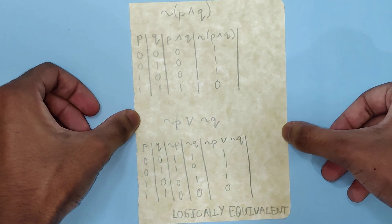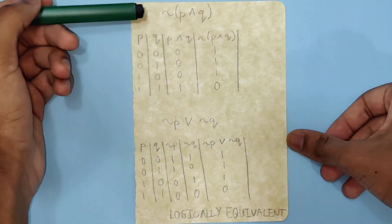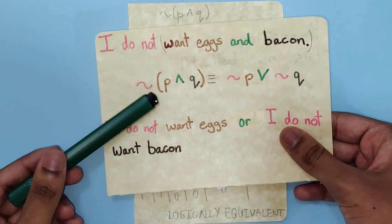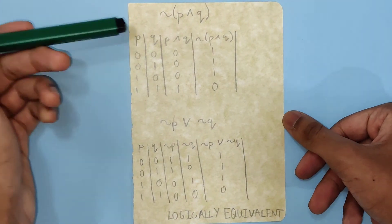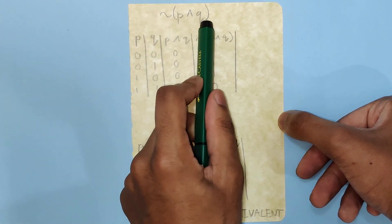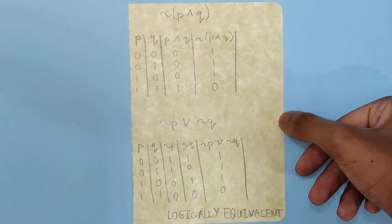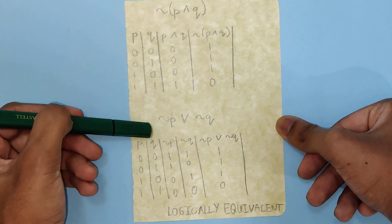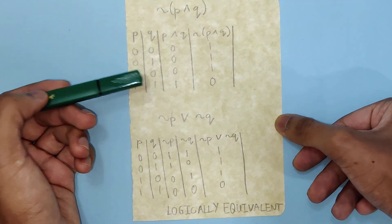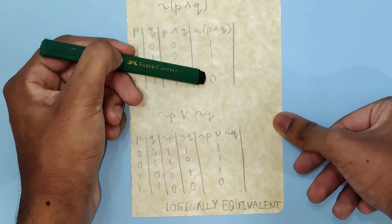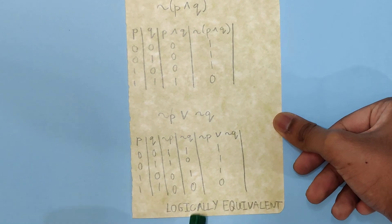There is also a mathematical proof for De Morgan's first law, which you can pause the video to copy down if you're interested. It works by comparing the truth tables for not (P and Q) and not P or not Q. You start with P and Q, then compute P and Q, then not (P and Q); and separately compute not P, not Q, and then not P or not Q. Because these final columns look the same, we call the two expressions logically equivalent.